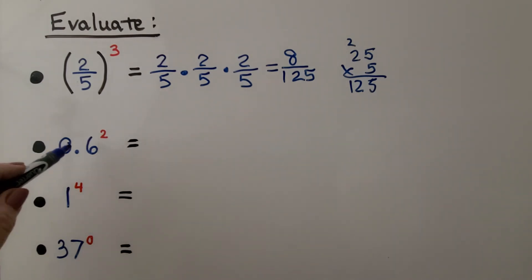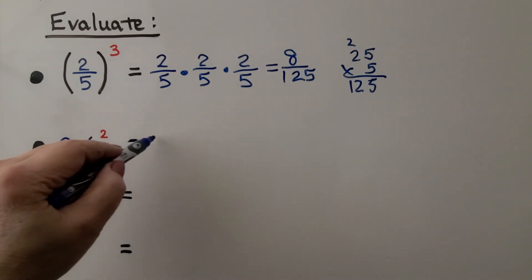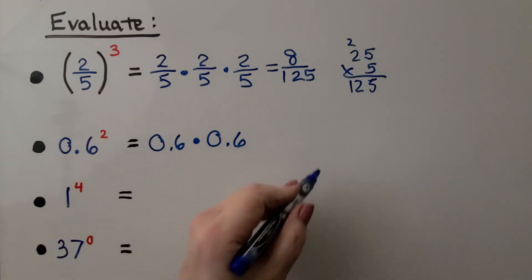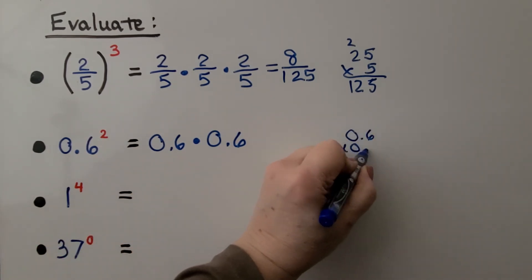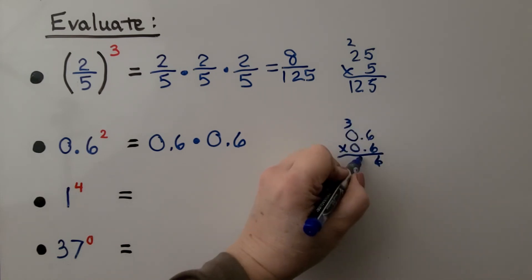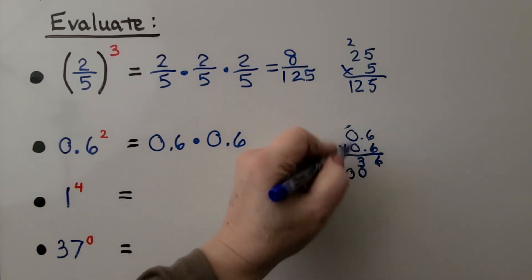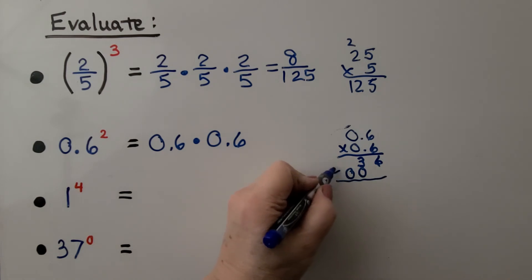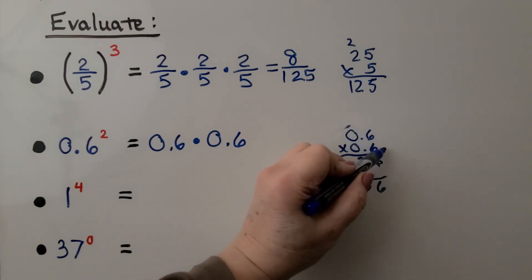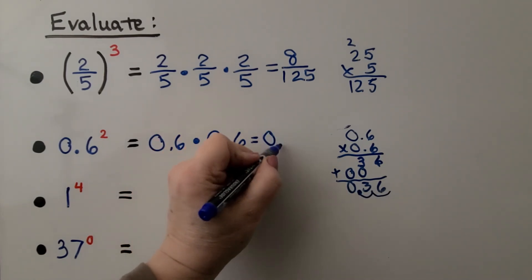Here we have a decimal: 0.6 raised to the second power. That means we're going to use 6 tenths as a factor 2 times, so 6 tenths times 6 tenths. We can stack them: 0.6 times 0.6. 6 times 6 is 36, and carrying through the place values we get 0 for the ones, 3 for the tenths, and 6 for the hundredths. We count 2 decimal jumps in the equation, so the result is 36 hundredths, or 0.36.